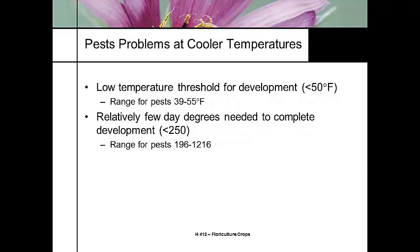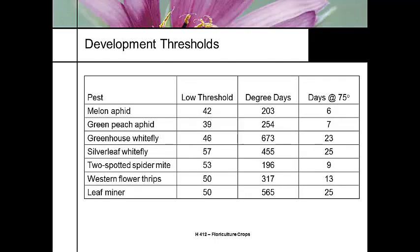Most low temperature thresholds are between 39 and 55°F depending on the species. You can get the most rapid outbreaks above 196 to 1200 day degrees for a fast generation. For aphids the low threshold is 39–42°F. Western flower thrips and leaf miners are at 50°F. At 75°F, melon aphids take about 6 days per generation, while leaf miners take about 25 days — so you get an idea of how quickly populations can build.